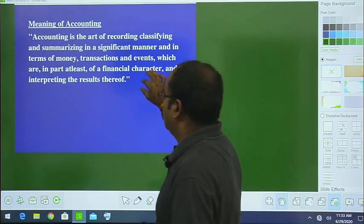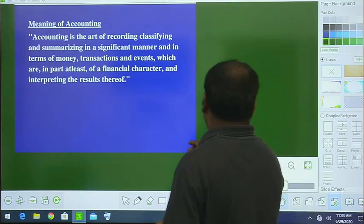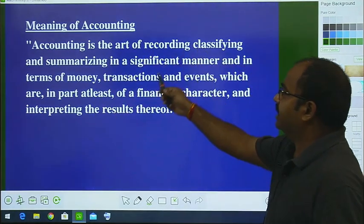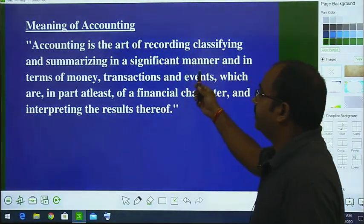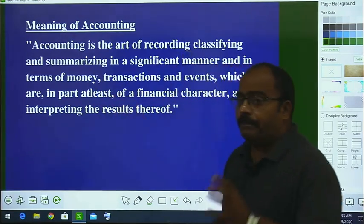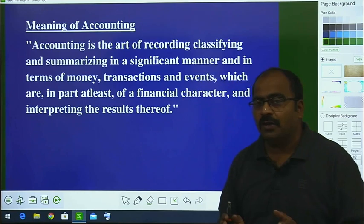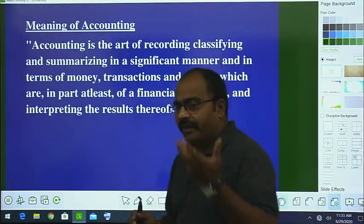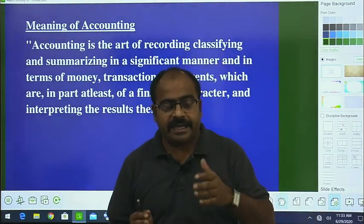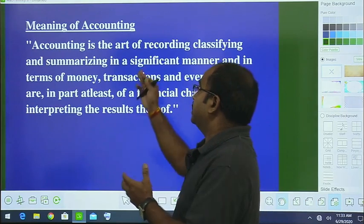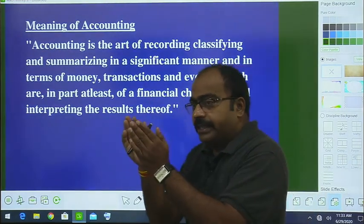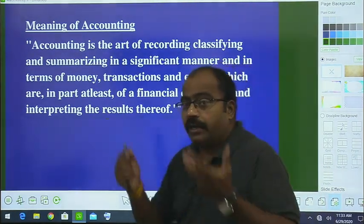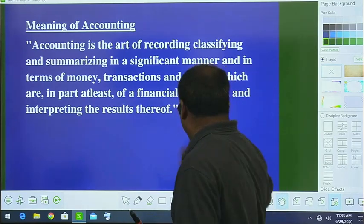What is the art of recording, classifying, and summarizing in a significant manner, and in terms of money — that is, money-related transactions — what do we have to do? Record, classify. What do we have to do? Summarize. Summarize means we have to summarize things and then at the last step we check our results. I think it is clear to all of you.